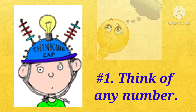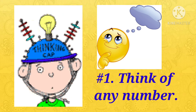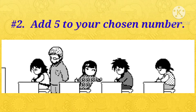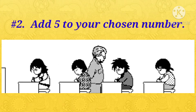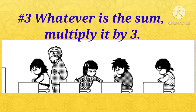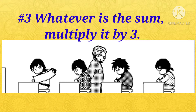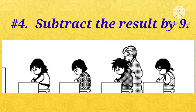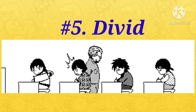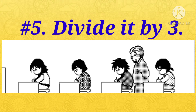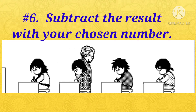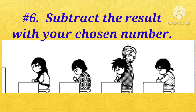Okay, first think of any number. Then add 5 to your chosen number. Whatever is the sum, multiply it by 3. Subtract the result by 9. Then divide it by 3. Lastly, subtract the result with your chosen number.